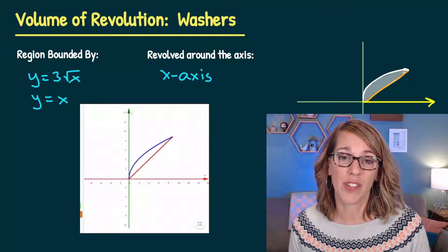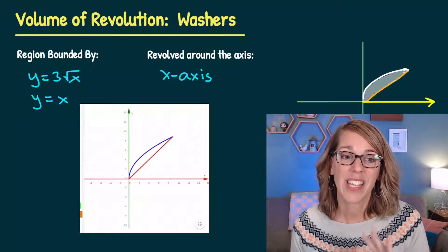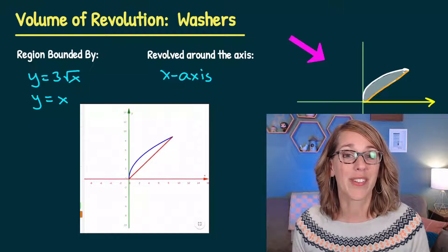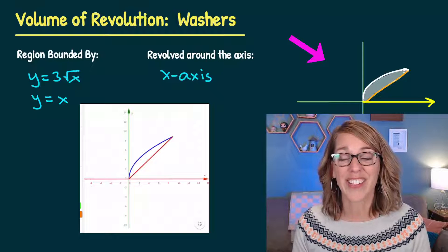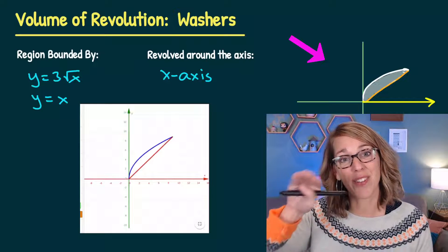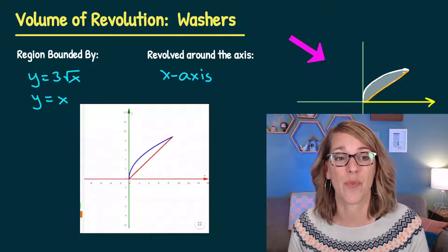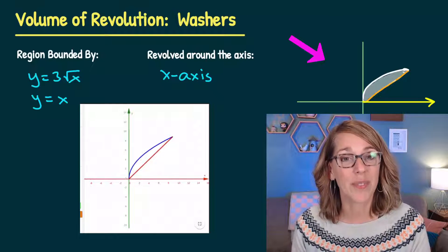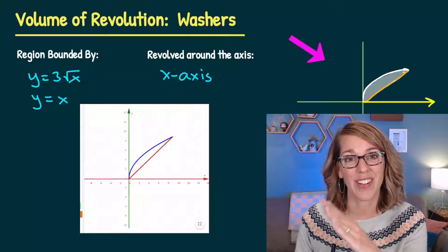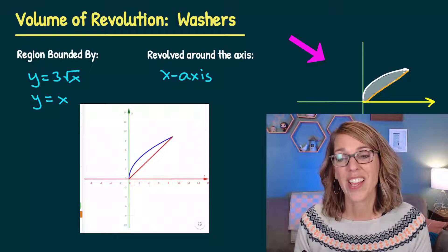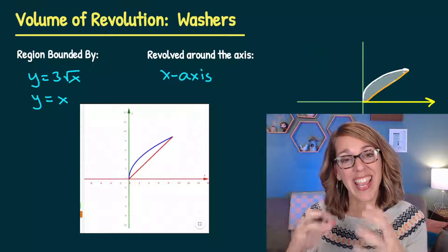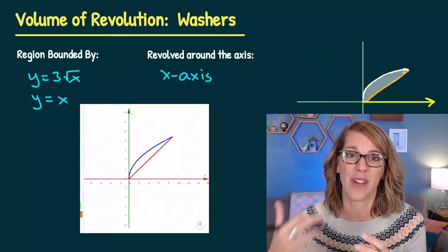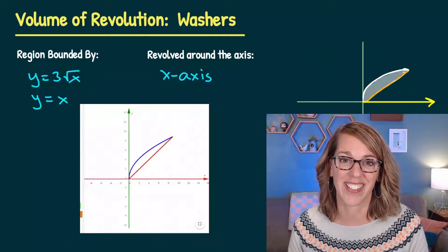Let's do some volumes of revolution using washers. In this first example, I've got y is equal to 3 radical x — that's the curve you see there in white — and y is equal to x, that's the line you see there in orange. I'm going to take that region and revolve it around the x-axis.